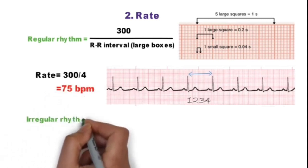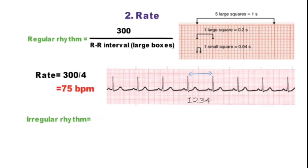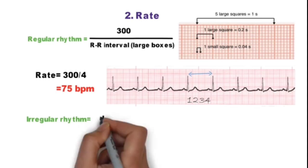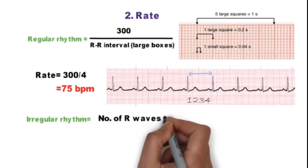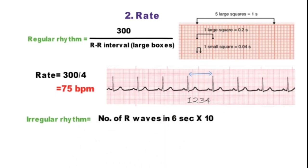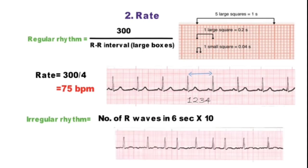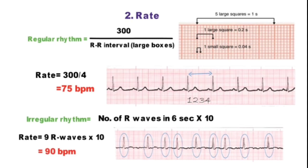But if the rhythm is irregular, as in atrial fibrillation, rate is calculated by number of R waves in 6 seconds multiplied by 10. In this ECG strip there are 9 R waves, so rate comes out to be 90 beats per minute.